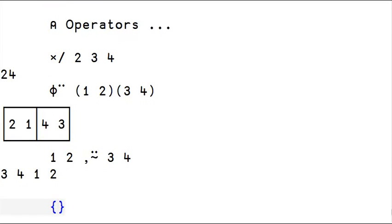When defining an operator, double alpha and double omega refer to its left and right operands, and single alpha and omega to its argument arrays.